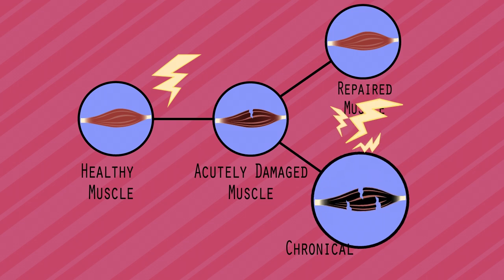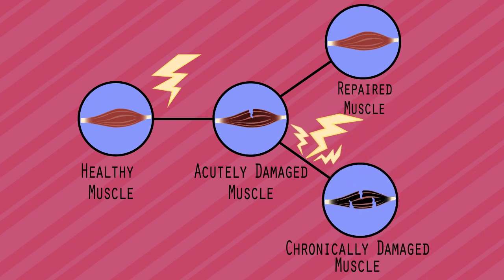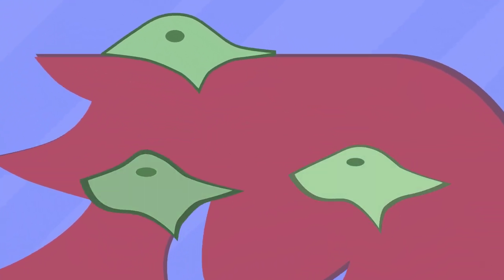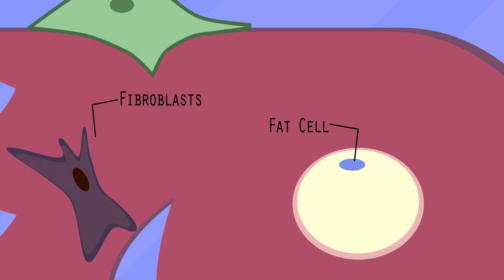However, after continual damage, such as damaged muscles of dystrophia patients, the FAPs survive within the tissue. They then differentiate into fat cells and fibroblasts.